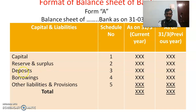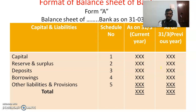Under Capital and Liabilities, we have Capital as Schedule No. 1, Reserves and Surplus as Schedule 2, Deposits under Schedule 3, Borrowings under Schedule 4, and Other Liabilities and Provisions under Schedule No. 5. The amounts relating to the current year as well as the previous year are to be disclosed on the face of this format.